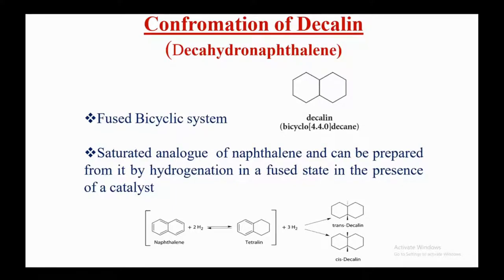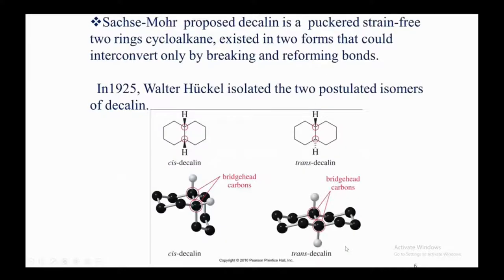In trans-decalin, one hydrogen at the ring junction is on the dotted line and the other is on the wedge (bold), while in cis-decalin both hydrogens are on the bold line. Sachse and Mohr proposed that decalin is a puckered, strain-free two-ring cycloalkane existing in two forms that could interconvert only by breaking and reforming bonds.